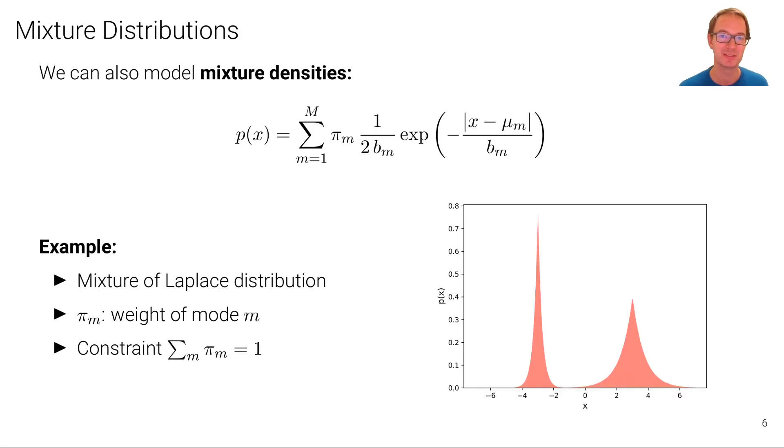We can also model mixture densities, of course, by doing a weighted combination of multiple parametric density functions. In this case, a mixture of Laplace distributions, where we see that here on the right-hand side we have the formula for the Laplace distribution, but we have now m Laplace distributions that are linearly combined with these weights, weight of each mode pi m. And the constraint for these weights is that these must sum to one as well. So we can model multimodal distributions like such.